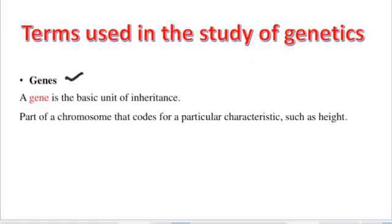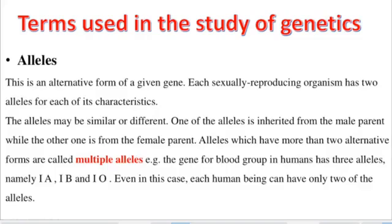We also have genes. A gene is a basic unit of inheritance. Or we can say a gene is a part of a chromosome that codes for a particular characteristic, such as height, eye color, or skin color.